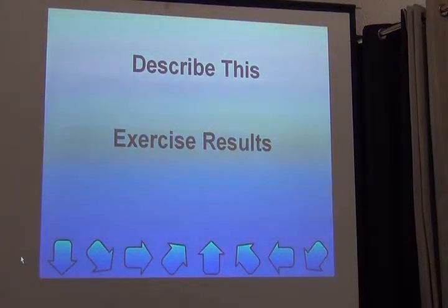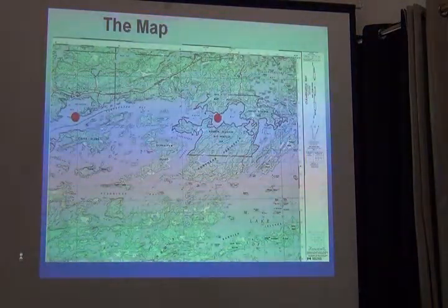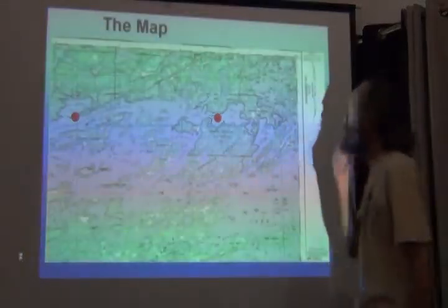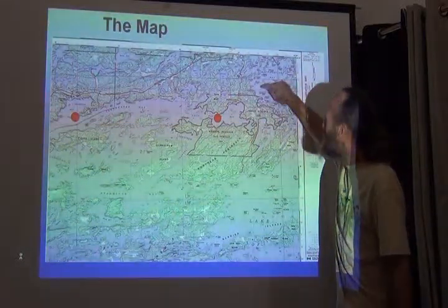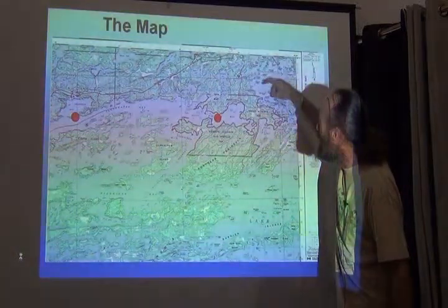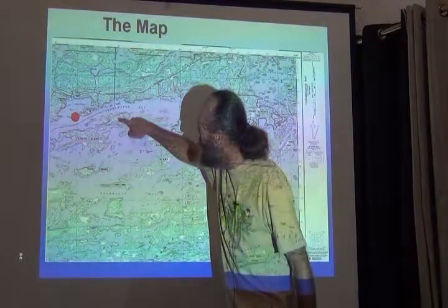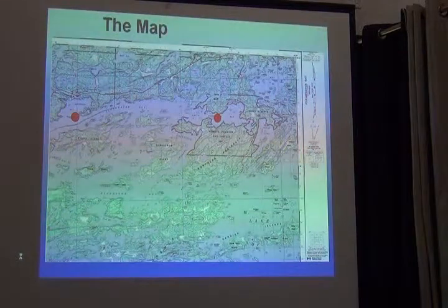I'll jump right into what happened with the exercise, as I promised. Remember that we had given you a map and there were dots on the map. Those of you who had map B, your dot was somewhere right in here, and those with map A, your dot was right here. So let's see what happened in practice.